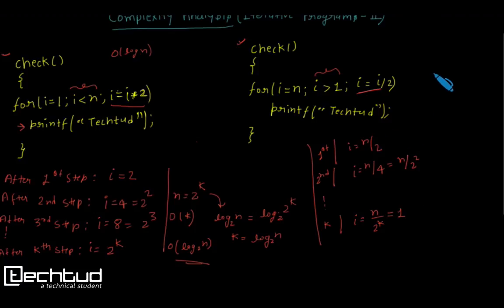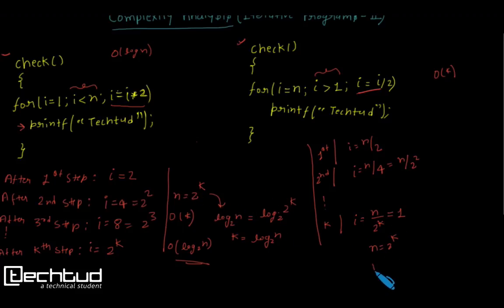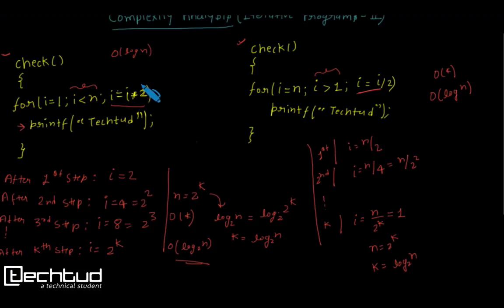The complexity is O(k). Since n / 2^k = 1 means n = 2^k, applying log base 2 gives k = log₂(n). So the complexity of this function is also O(log n). In both cases — whether i is doubled or halved each iteration — the complexity is O(log n).